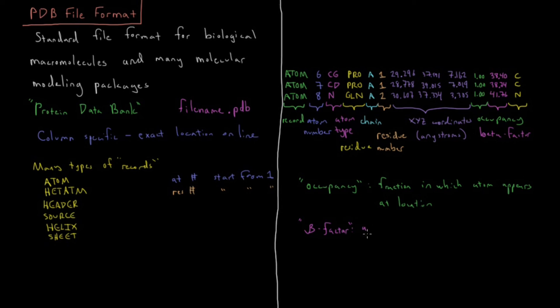The beta factor is a value which is proportional to the average displacement of whatever atom we're interested in. The actual value of the beta factor, 38.4 or 41.7 in this case, so beta for a given atom i is equal to 8 pi squared u i squared, where u is the actual displacement of the atom.